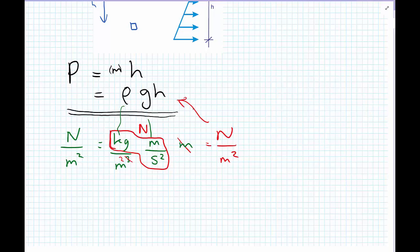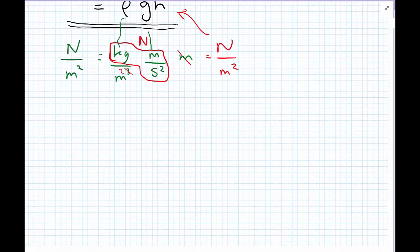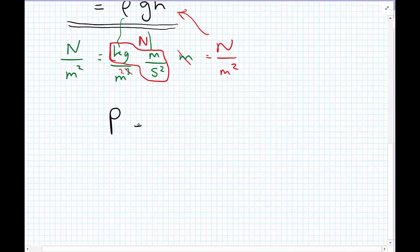This formula also gets written in a slightly different way. The different way that you might see it written is P equals gamma times H.